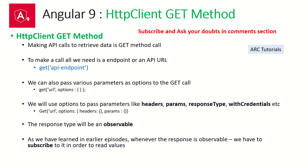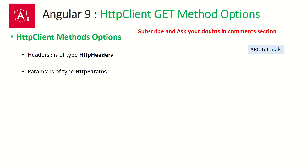We get the response and we have to process it via the subscribe method. HTTP client can also take different params like headers and params options. These are called options which go with the GET method, and they remain the same when you are doing POST, PUT, or DELETE — so what I show you today in GET applies to POST, PUT, and DELETE as well.